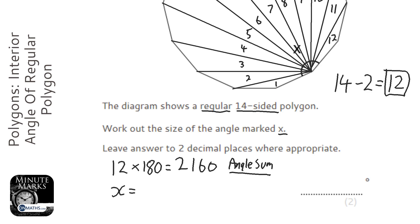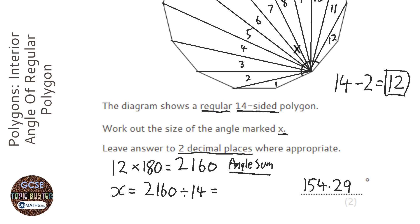Now to find out x, all we need to do is get that angle sum and divide it by 14, because the 14 angles in this shape are equal. So I'm going to divide that by 14 and I get the answer of 154.29. It says 285 in the calculator, but it wants it to two decimal places, so the five will make that eight a nine.